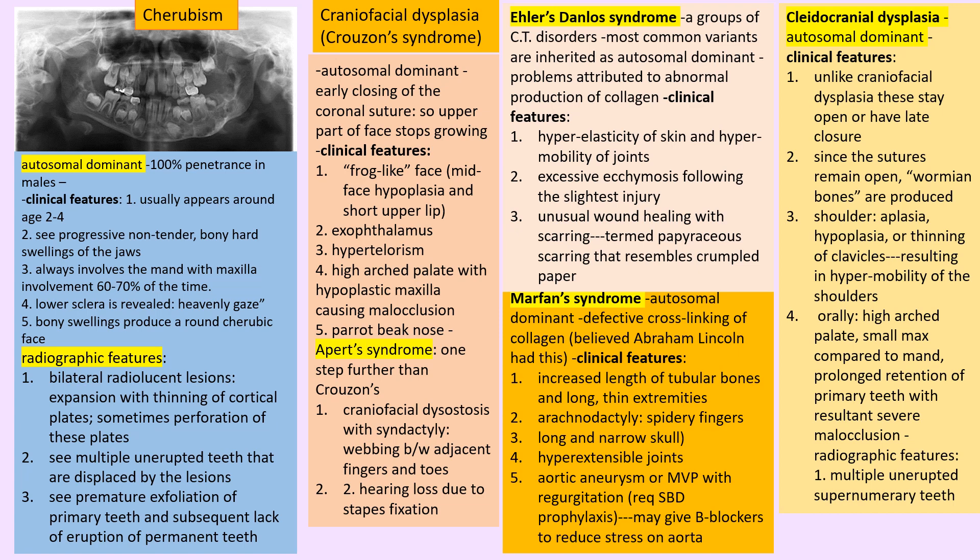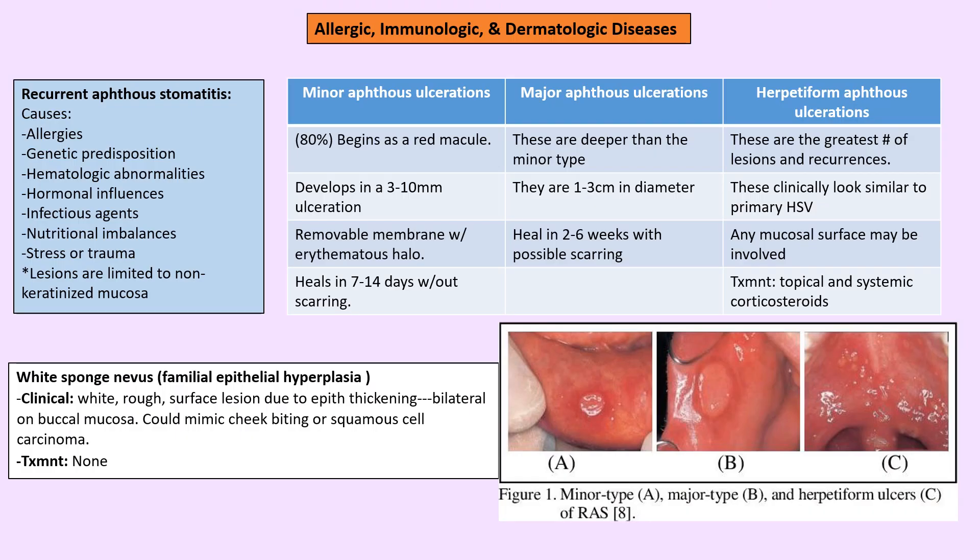Cleidocranial dysplasia is an autosomal dominant condition where cranial sutures fuse very late, giving a floating wormian bone appearance. The clavicle is not fully developed, causing hypermobility of the shoulder. Features include small maxilla giving a Class III appearance, high arch palate, long retention of primary teeth, severe malocclusion, and multiple unerupted supernumerary teeth.